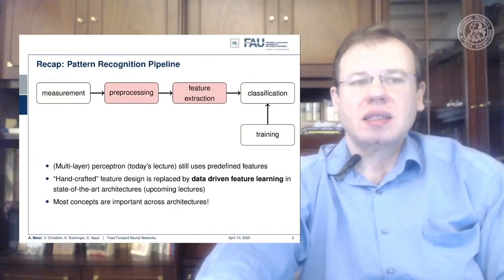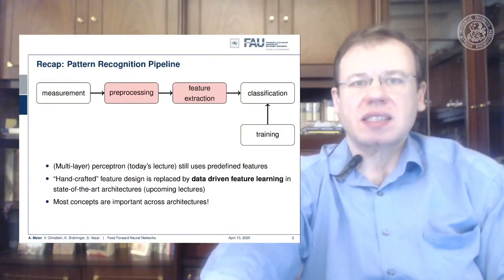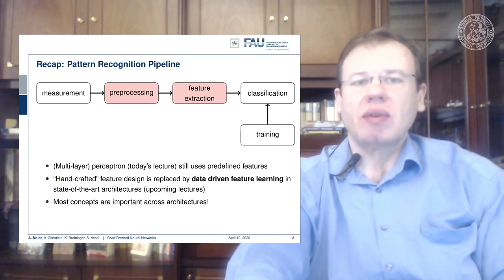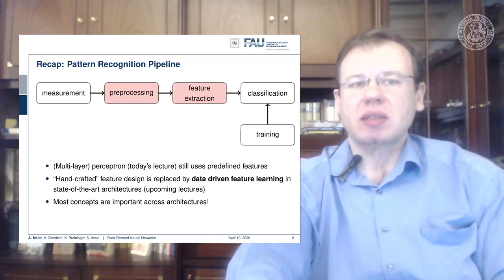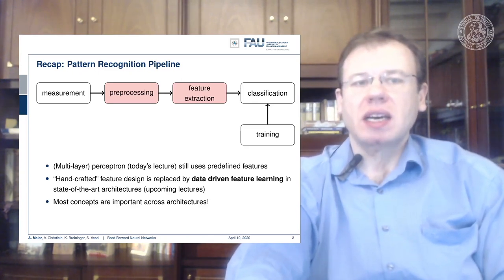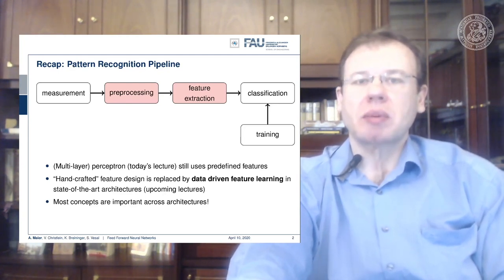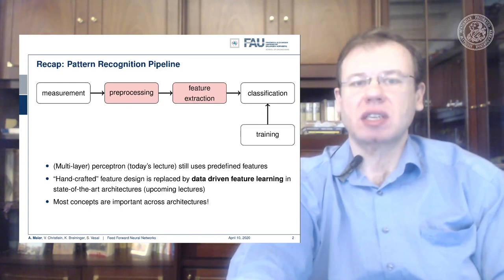If you look at classical pattern recognition and machine learning, we would typically follow a pattern recognition pipeline where we have some measurement that is converted and then preprocessed in order to increase the quality and decrease noise. In the preprocessing you essentially stay in the same domain as the input. So if you have an image as an input, the output of the preprocessing will also be an image but with probably better properties towards the classification task.